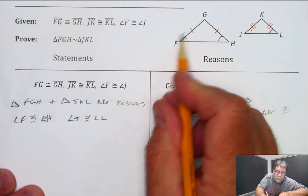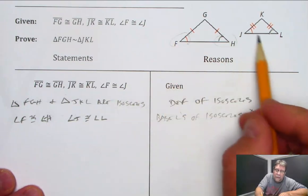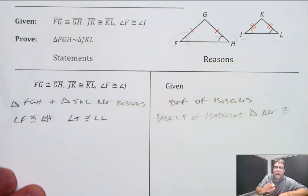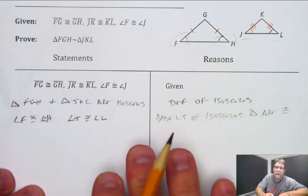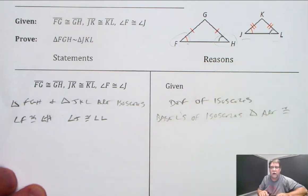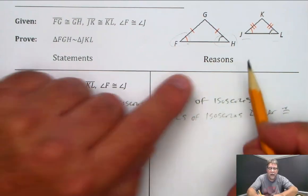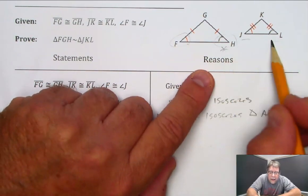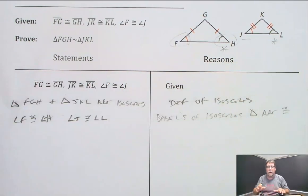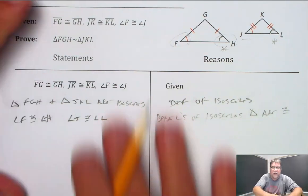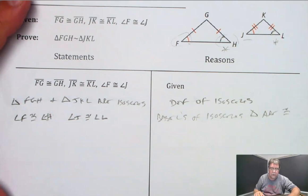I can't quite say that the triangles are similar yet because I need to show that this one and this one are congruent. And I don't have that yet. It doesn't say anywhere in here that angle H and angle L are congruent.